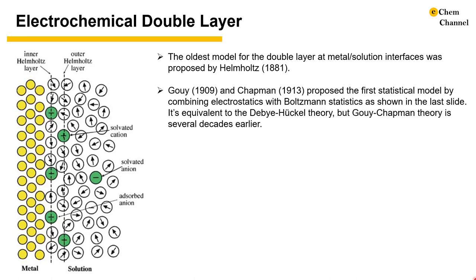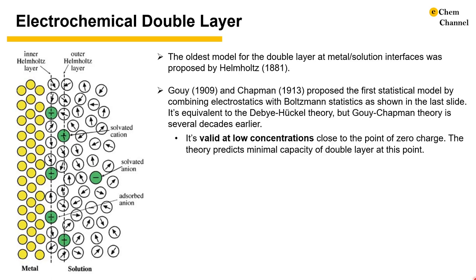Gouy in 1909 and Chapman in 1913 proposed the first statistical model by combining electrostatics with Boltzmann statistics, as shown in the last slide. It's equivalent to the Debye-Hückel theory but the Gouy-Chapman theory was several decades earlier. The theory is valid at low concentrations close to the point of zero charge. The theory successfully predicts a minimum capacity of double layer at this point.